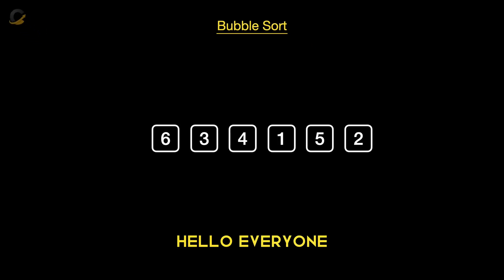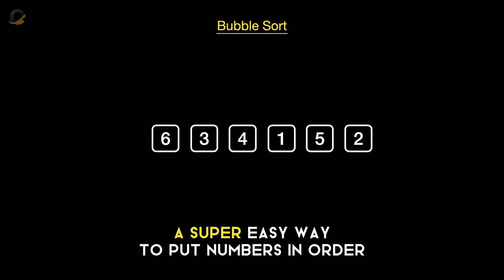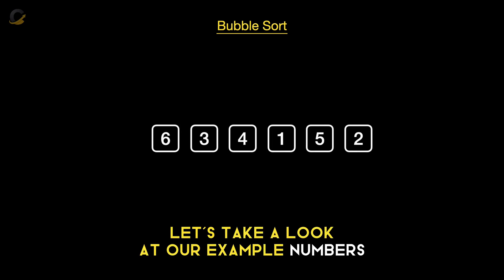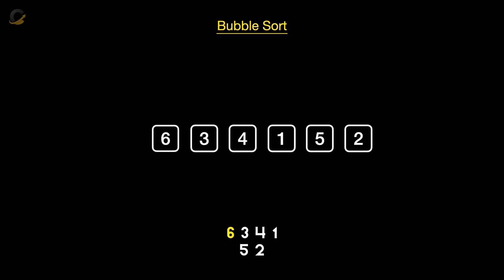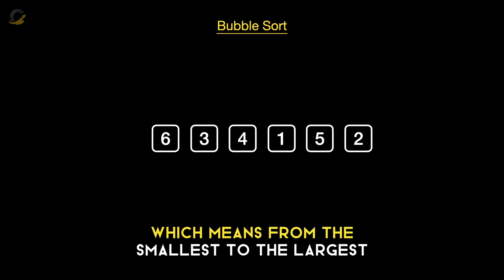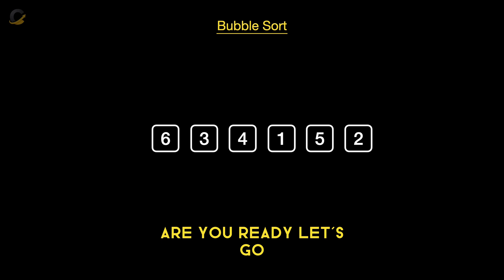Hello everyone! Today we're checking out Bubble Sort, a super easy way to put numbers in order. Let's take a look at our example numbers: 6, 3, 4, 1, 5, 2. We're going to sort them in ascending order, which means from the smallest to the largest. Are you ready? Let's go.